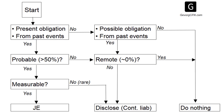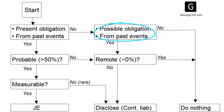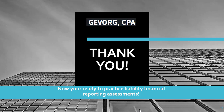It's important to know these differences when assessing an AO under a specific framework so you can get the applicable marks. Overall, the key difference to keep in mind when reviewing an AO is to remember that provisions are unavoidable and will happen, but the timing and amounts are uncertain, whereas a contingent liability may or may not happen. Be sure to integrate case facts when assessing these criteria to achieve depth. So now I hope you're ready to practice liability financial reporting assessment opportunities. Thank you.